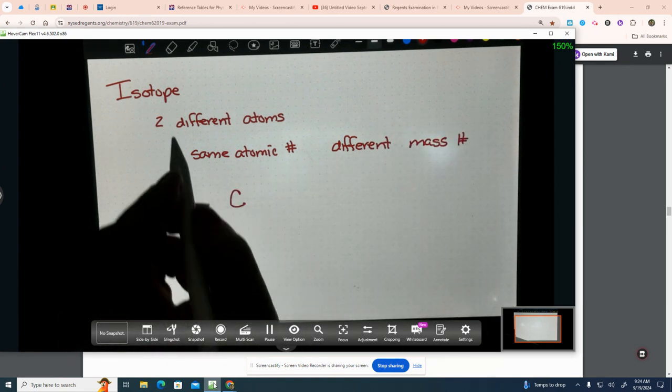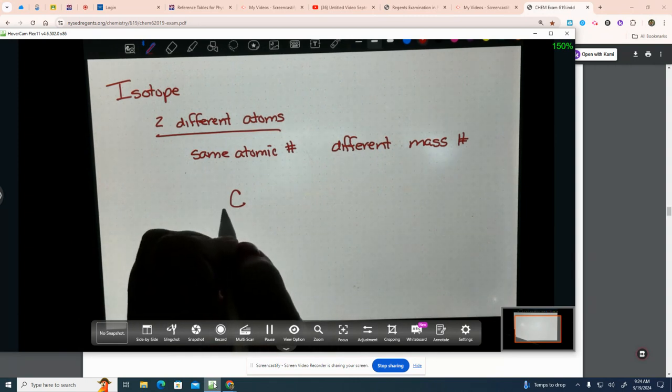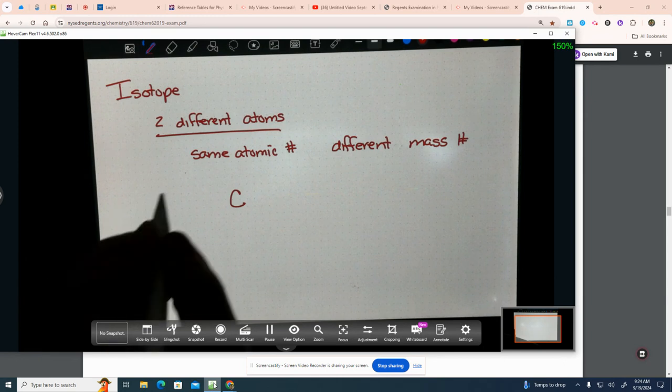So let's say we have an atom. That's what I mean by two different atoms. I have an atom of carbon. And carbon has how many protons? Yes. I hear it. I hear it over there. Six.